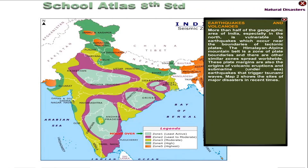These plate margins are also the origins of volcanic eruptions and submarine under-sea earthquakes that trigger tsunami waves. Map 2 shows the sites of major disasters in recent times.